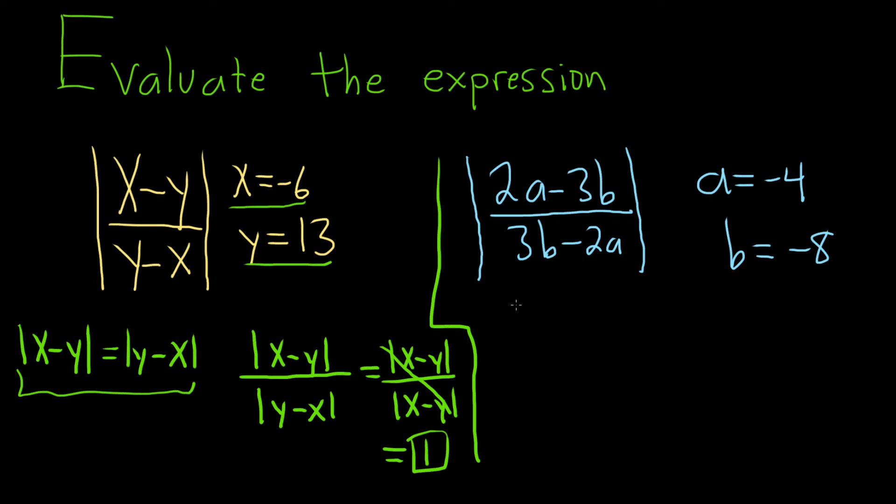We can do the same thing here. We take the absolute value of the top piece, 2a minus 3b, and the absolute value of the bottom piece, 3b minus 2a.